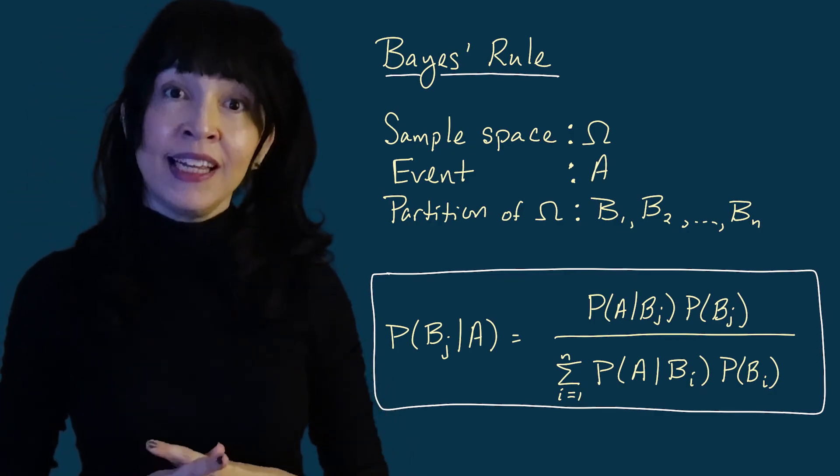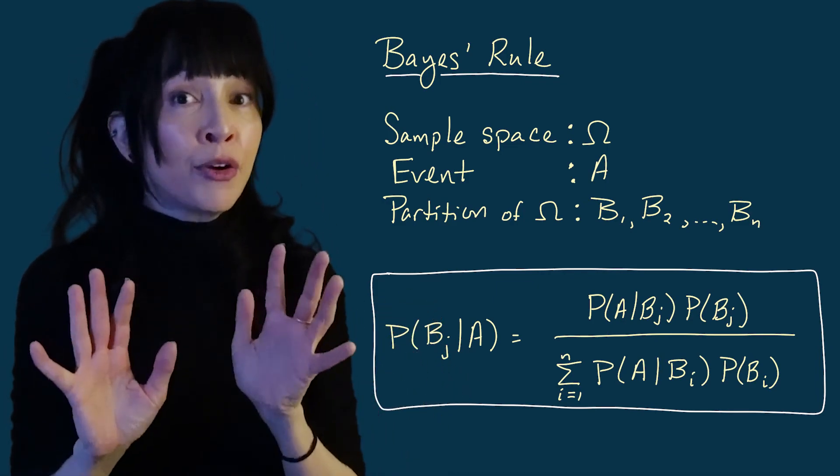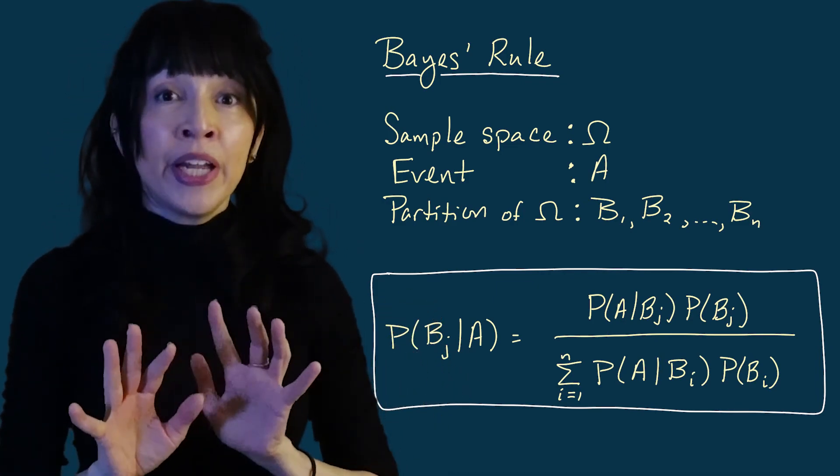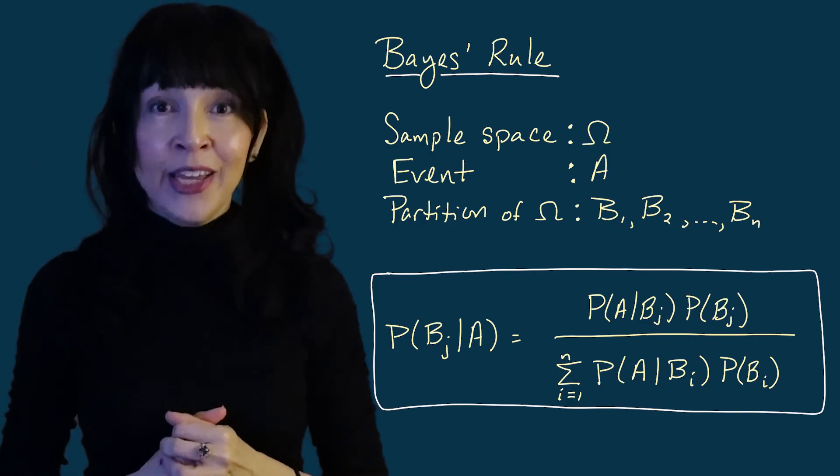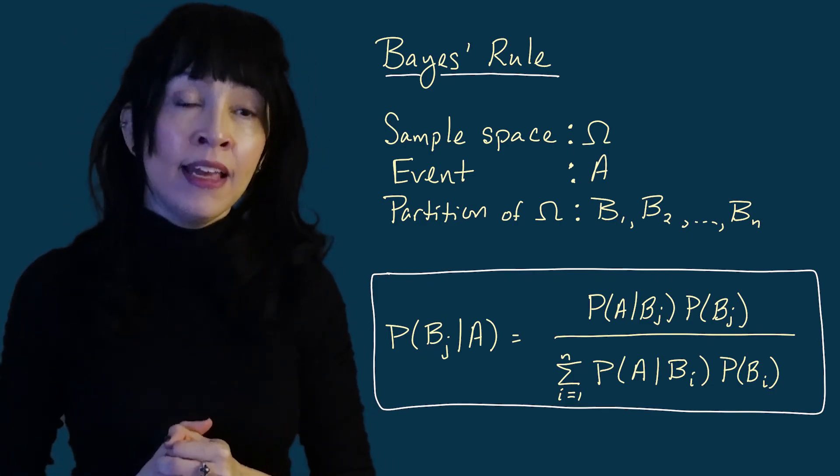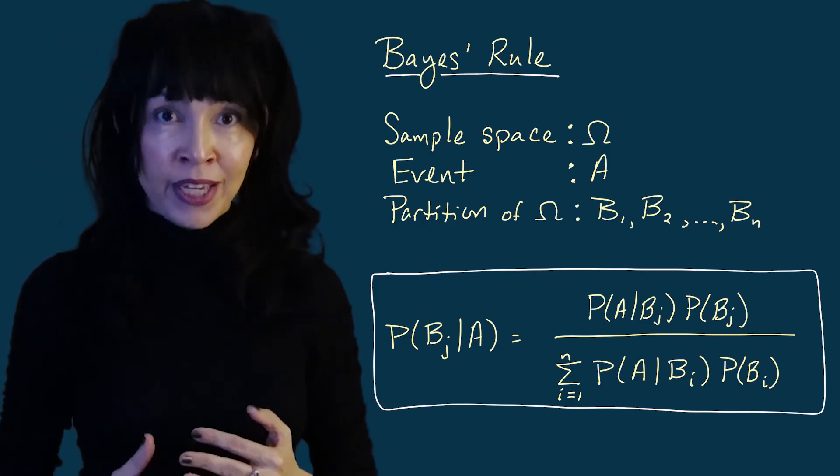And on the bottom you would have the probability that A happened and if you know that great you can just use it. But if not you would expand it out this way using the law of total probability by conditioning on which of the B events happened.